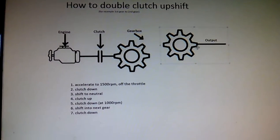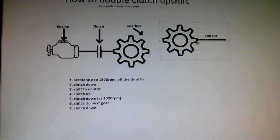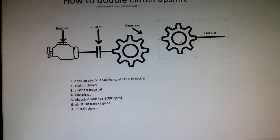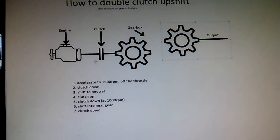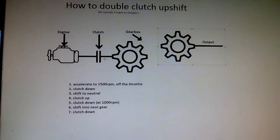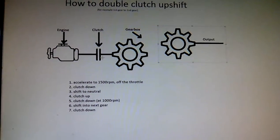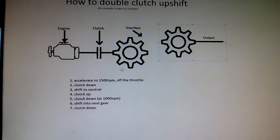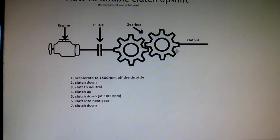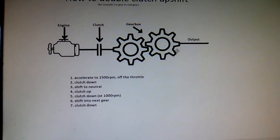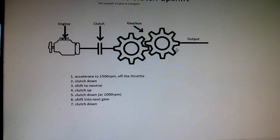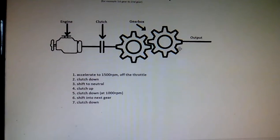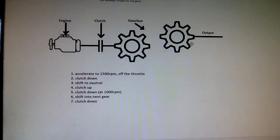This is how to change gears in a vehicle with a crash box transmission. The engine is connected to one side of the clutch, the input of the gearbox is connected to the other side of the clutch, and the output gets connected when the transmission is shifted into a gear.